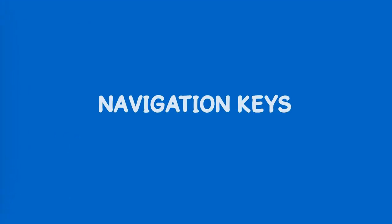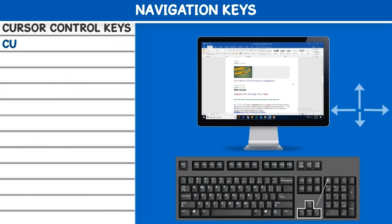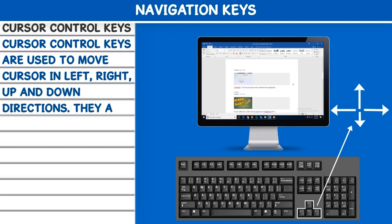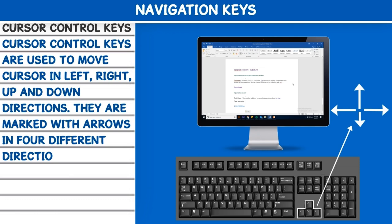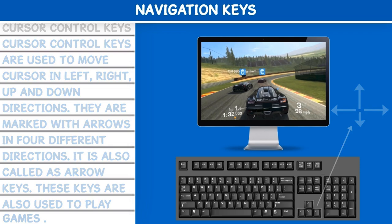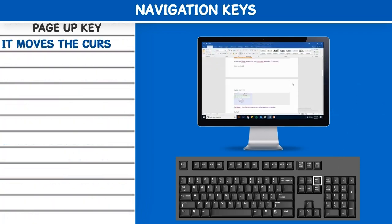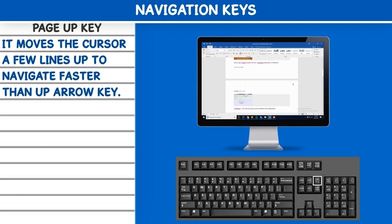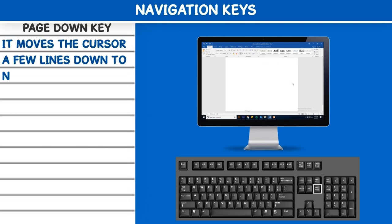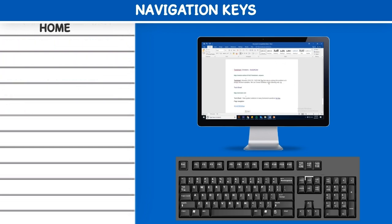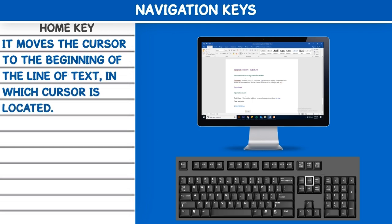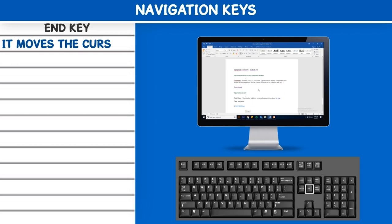Navigation Keys. Cursor control keys are used to move the cursor in left, right, up, and down directions. They are marked with arrows in four different directions, and are also called arrow keys. These keys are also used to play games. Page Up key: It moves the cursor a few lines up to navigate faster than the Up arrow key. Page Down key: It moves the cursor a few lines down to navigate faster than the Down arrow key. Home key: It moves the cursor to the beginning of the line where the cursor is located. End key: It moves the cursor to the end of the line.